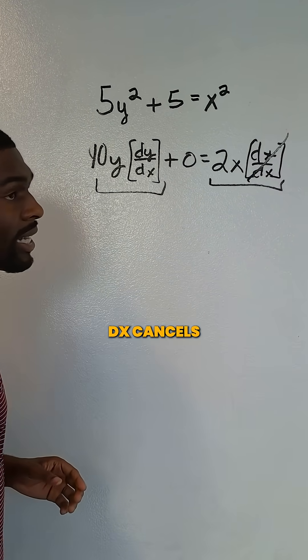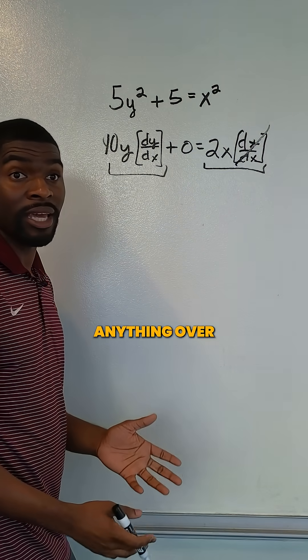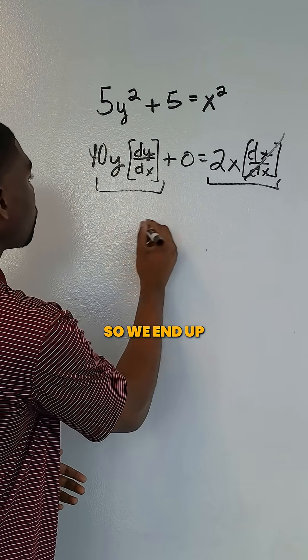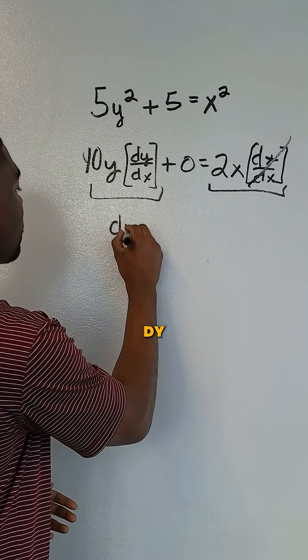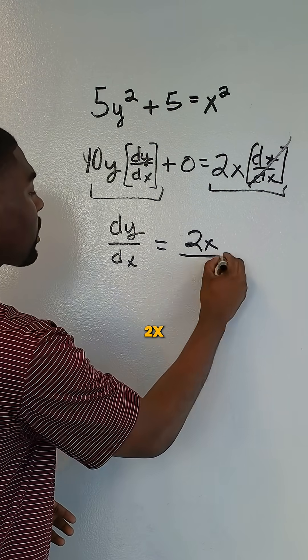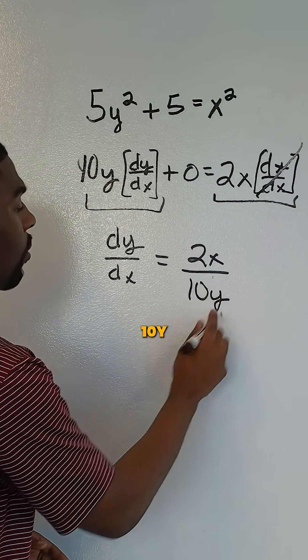So we know dx over dx cancels because anything over the same thing is going to be 1. So we're simply going to solve for dy/dx. We're going to divide by 10y. 2x, so we get 2x over 10y.